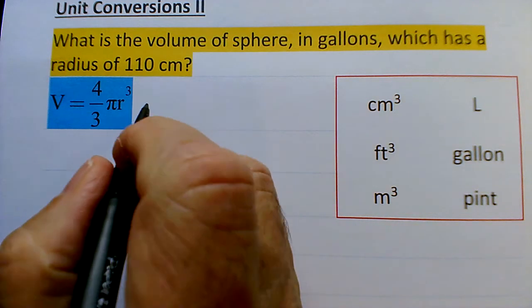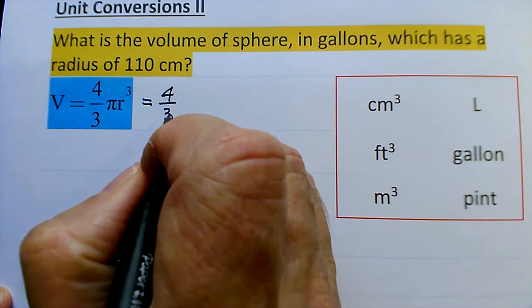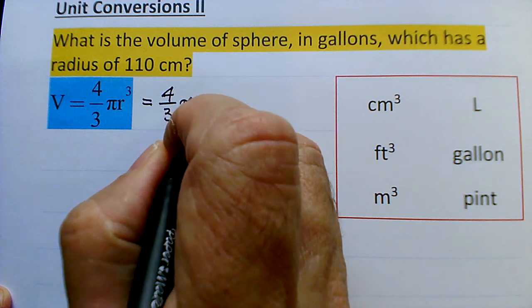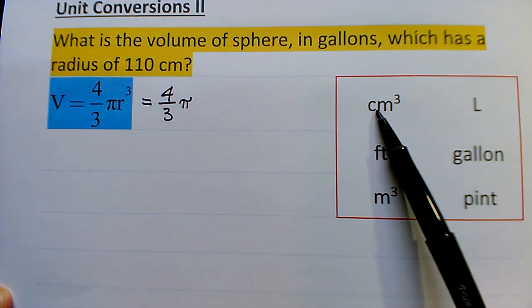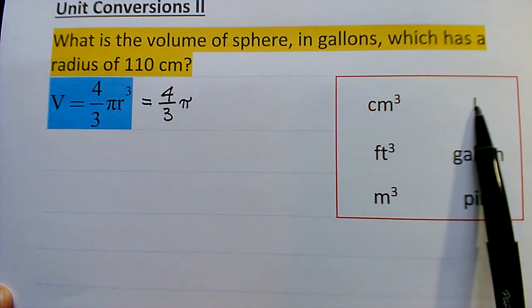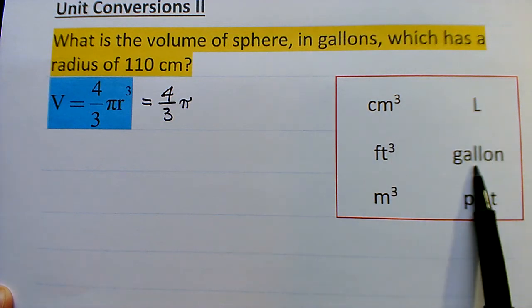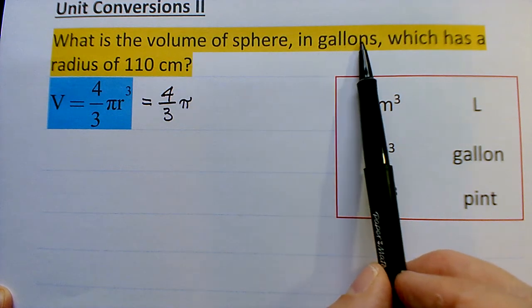First of all, we're going to have to calculate the volume in cubic centimeters. And once we get to cubic centimeters, which is a volume unit, we're going to then convert cubic centimeters to liters, and then to gallons, which is what the question is asking: find the volume of a sphere in gallons.